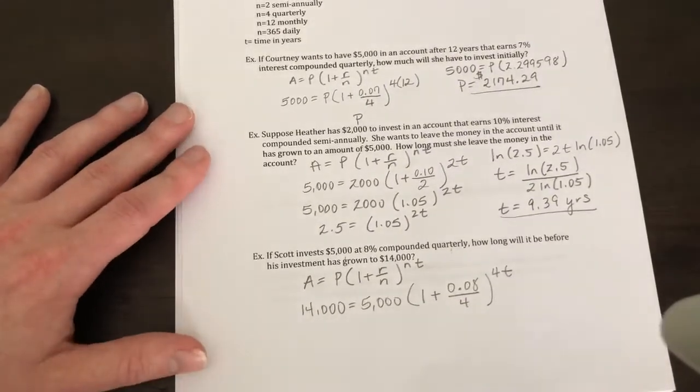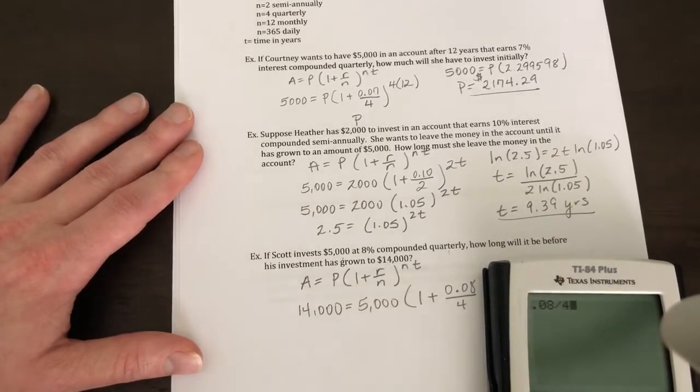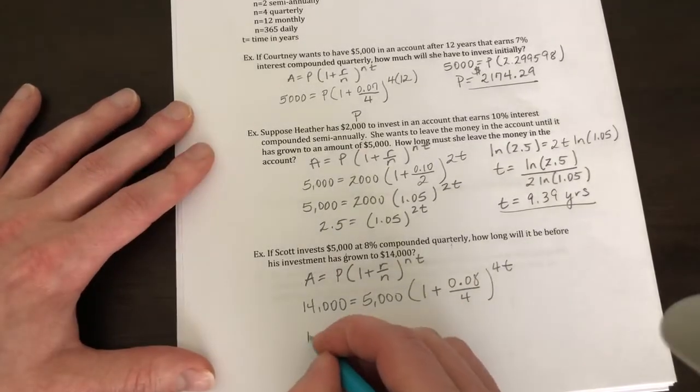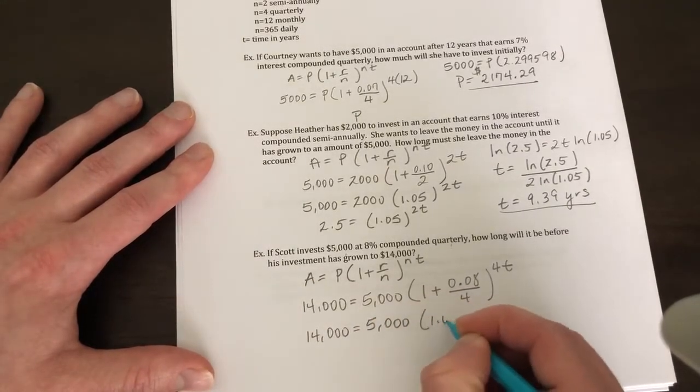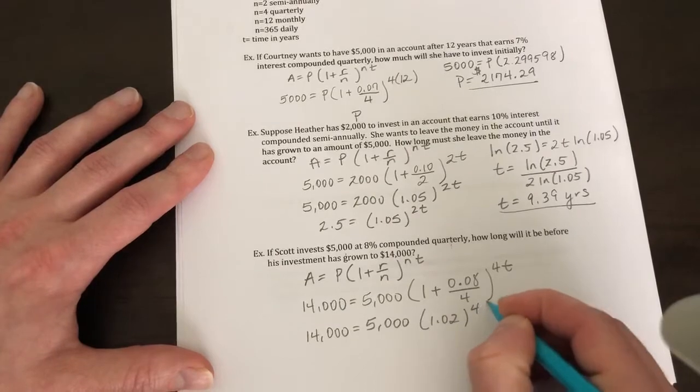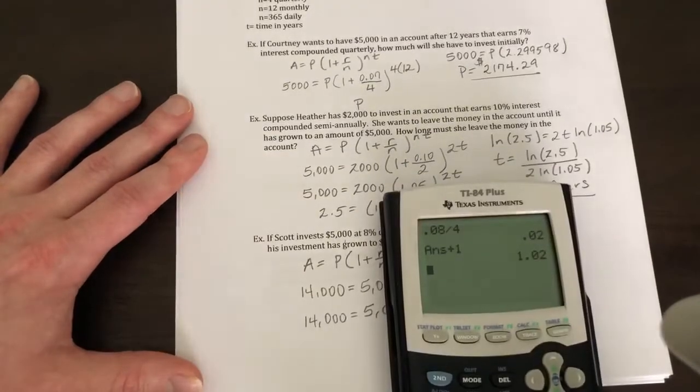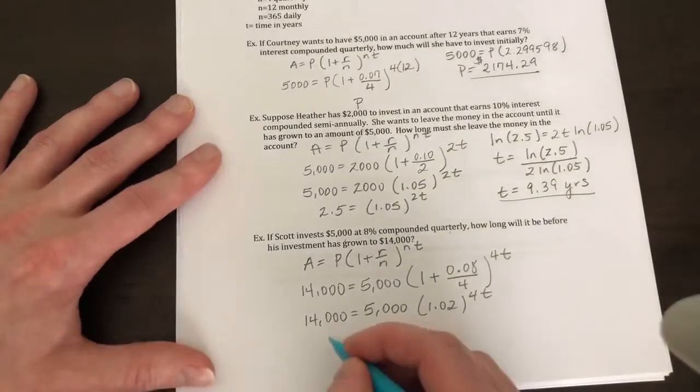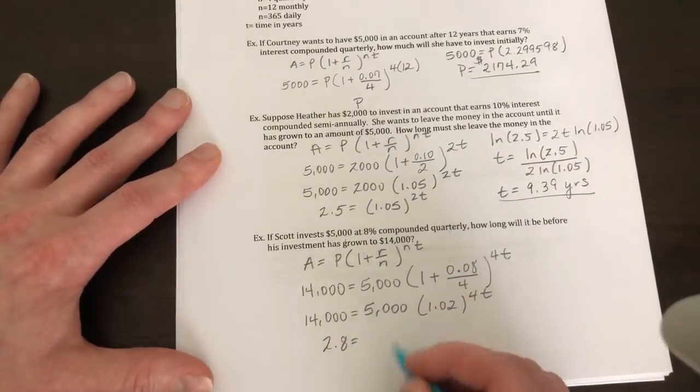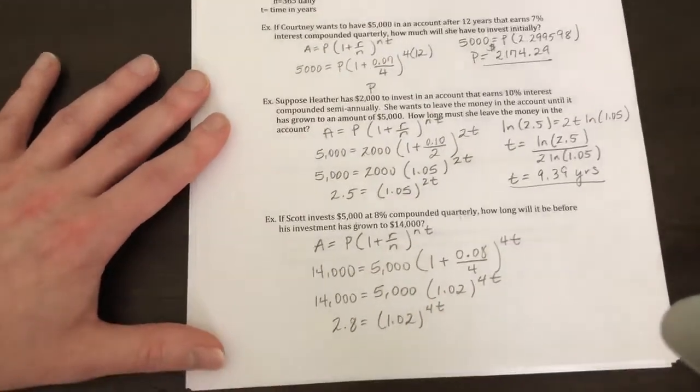Just like we did in the previous problem, I'm going to go ahead and do 0.08 divided by 4, add the 1, so I get 1.02. Your next step was to divide by 5,000, so 14,000 divided by 5,000 is 2.8.